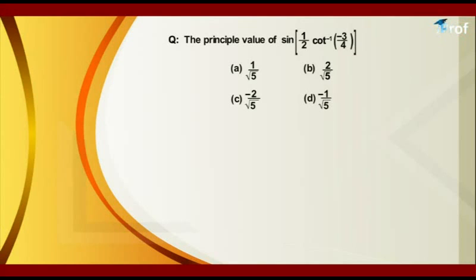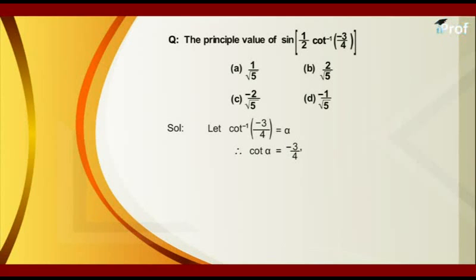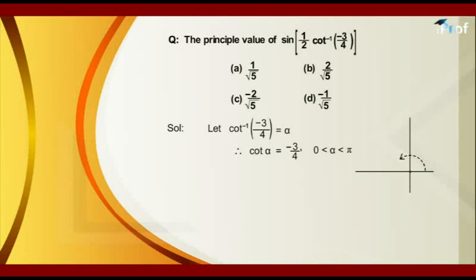In order to do this question, let cot inverse of minus 3 upon 4 be equal to alpha. Therefore, cot alpha is equal to minus 3 upon 4, where alpha lies between 0 and pi. Since cot alpha is minus 3 upon 4, it lies in the second quadrant. Therefore, cot alpha is minus 3 upon 4.